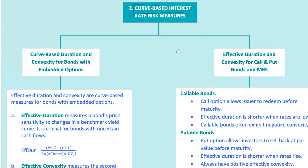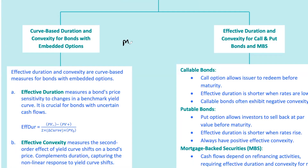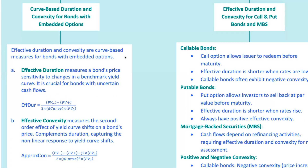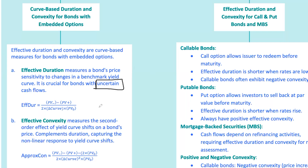First, let's talk about why we need curve-based measures for certain bonds. For vanilla bonds — those without any options — Macaulay duration and modified duration are great for estimating interest rate risk. But when bonds have embedded options, like callable or putable bonds or mortgage-backed securities, the cash flows aren't set in stone. That's where effective duration and effective convexity come into play. Effective duration measures a bond's price sensitivity to changes in a benchmark yield curve, making it more suitable for bonds with uncertain cash flows due to embedded options. It accounts for the possibility of early redemption — callable or put protection for putable.